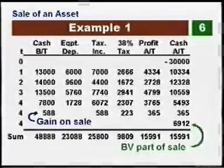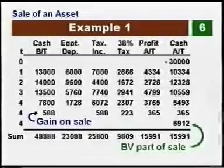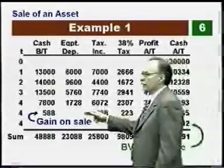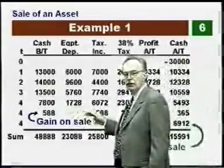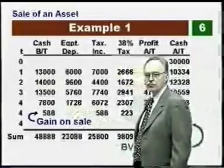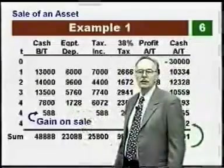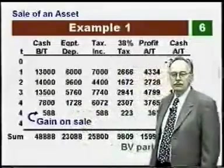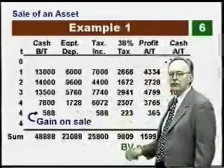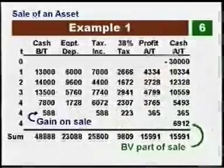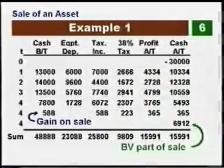We then have our column totals. The important thing to remember is that the taxable gain on the sale — called depreciation recapture — is taxed at the ordinary rate, computed by taking the salvage value minus the book value. The book value portion of the sale is not taxed; it comes in as a tax-free cash flow.